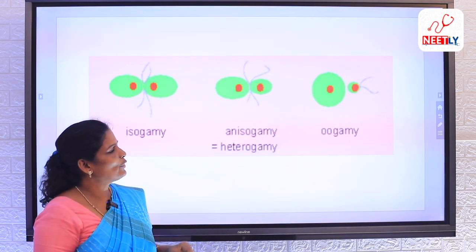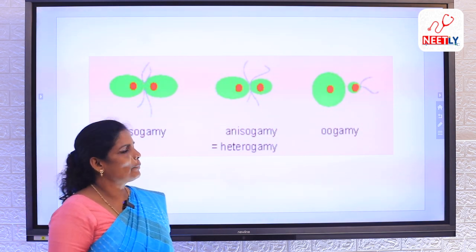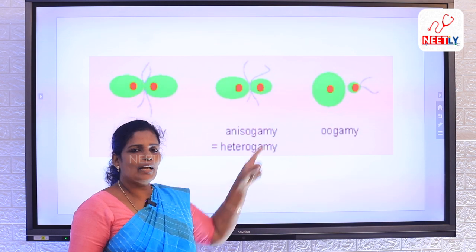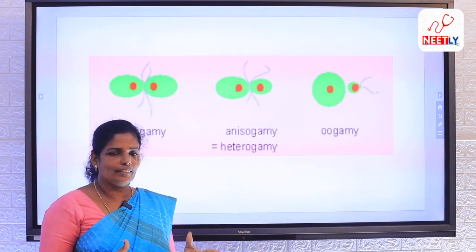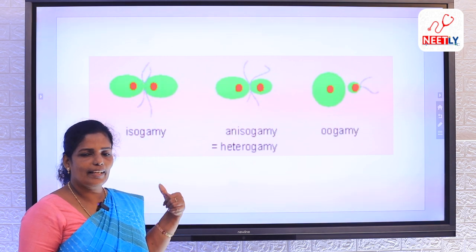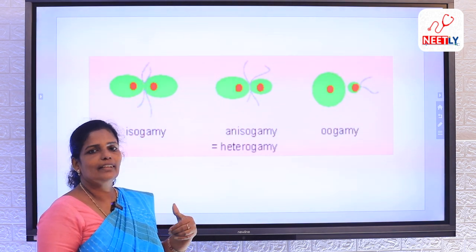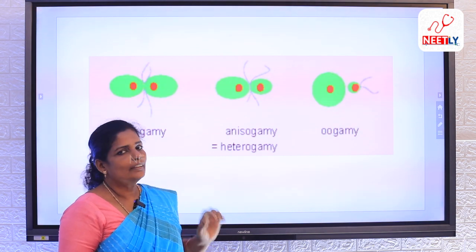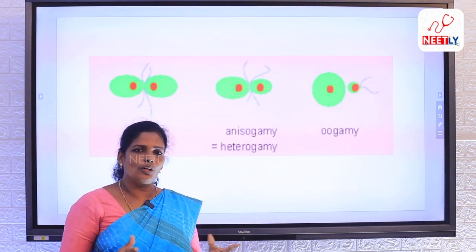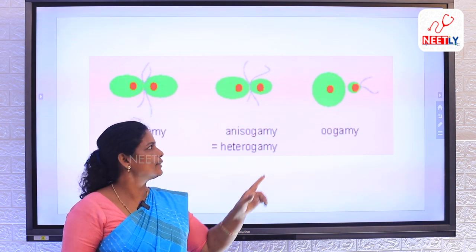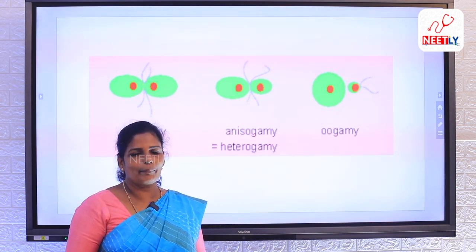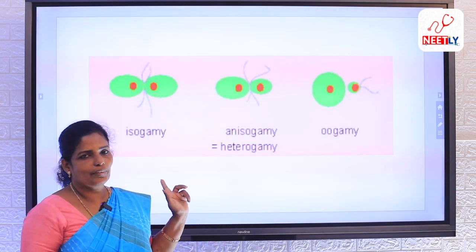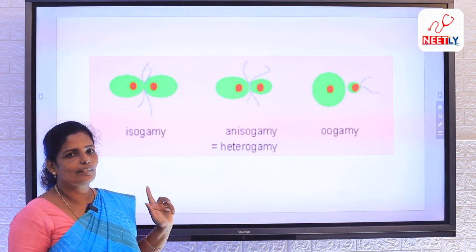The third one is oogamete. In oogamete, the female gamete will be usually larger and non-motile. But in the option, it is given that they are smaller and motile — that is wrong. Here, the female gametes are larger and non-motile; they won't move. Whereas the male gametes are smaller and motile. So the wrong statement is option B.